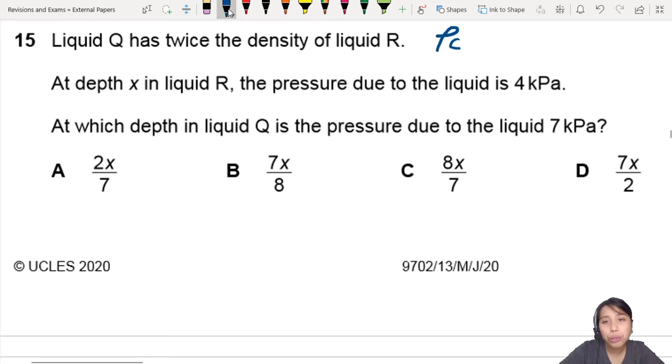So density of Q is twice the density of R. Okay, that's a good start.